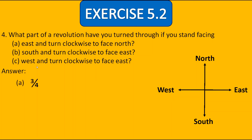In B, we are facing south and turn clockwise to face east. Going from south clockwise to east, we are making three fourths of the revolution. In C, we start from west and turn clockwise to face east. Going from west to east, we are clearly making half of the revolution.